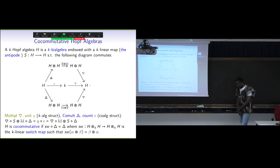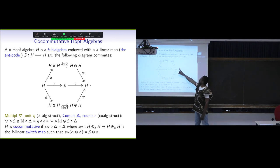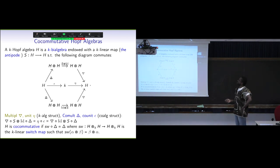We start with Hopf-Galois extensions. Some background concerning Hopf-algebras — co-commutative Hopf-algebras. The important fact is that here I have two structures: a structure of algebra and a structure of co-algebra. So here I have the multiplication and here I have the unit, and on the other side I have the co-multiplication and the co-unit. I will say that H here is a Hopf-algebra if this diagram is commutative, and I also want the Hopf-algebra to be co-commutative, which means that the application of the switch map with the co-multiplication is invariant.